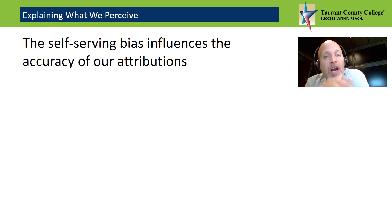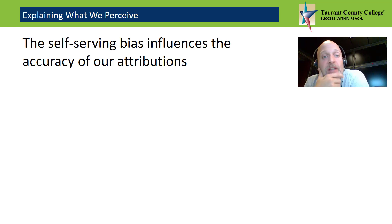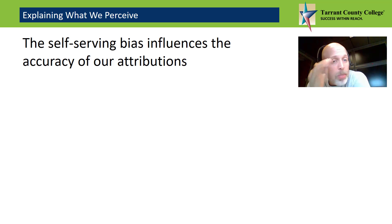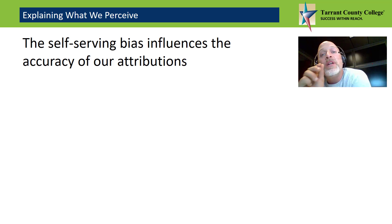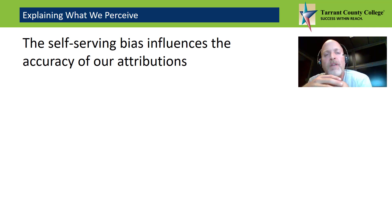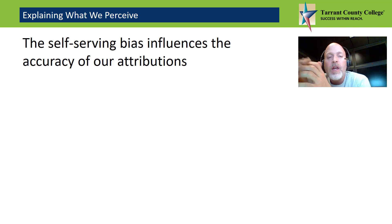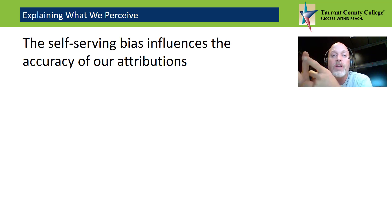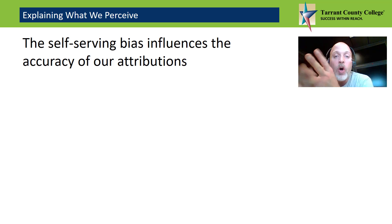Here's a great concept: we might think we explain behavior in an objective, rational way, but the truth is that we're all prone to taking mental shortcuts when coming up with attributions for other people's — as well as our own — behavior. As a result, our attributions are often less accurate than they should be. Three of the most common attribution errors are the self-serving bias, the fundamental attribution error, and over-attribution.